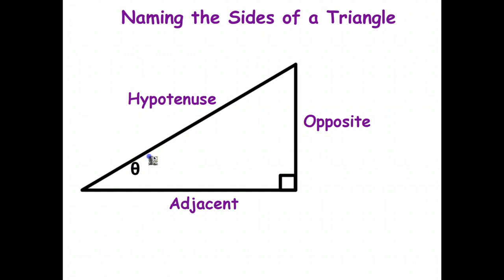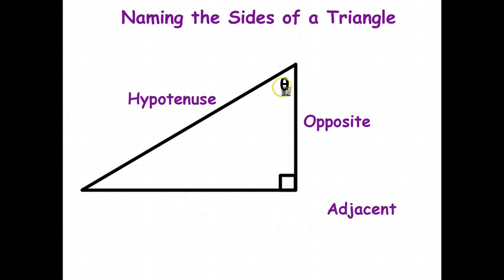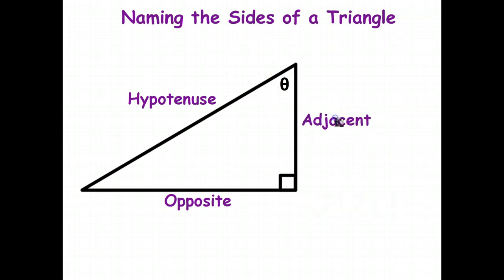Now the interesting thing is, if I chose that other angle instead, the hypotenuse is still the same — it's always the side opposite the right angle. But now, using this angle, if your eye was up there looking down, the opposite side changes to that side, and then the other side of the triangle next to the angle — besides the hypotenuse — becomes the adjacent. So it's very important to know which angle you're working with to decide which side is the opposite and which is the adjacent.